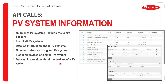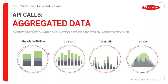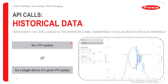Detailed device information from a PV system includes Smart Meters, home pilots, and similar devices. You can also make API calls for aggregated data — energy production and consumption data aggregated over a period of time, which could be the entire lifespan of the system, one year, one month, or daily data.